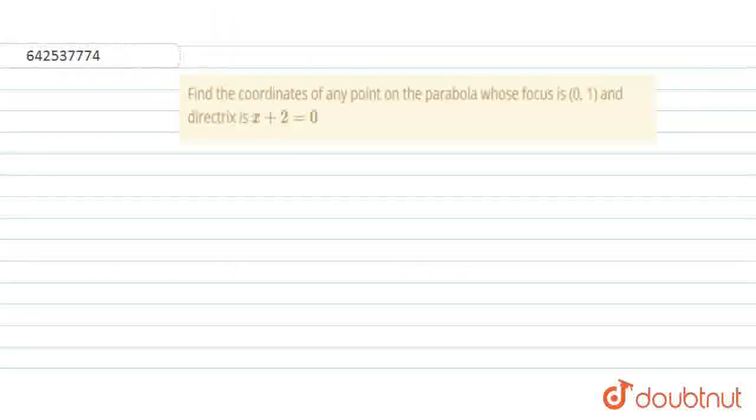Hello everyone, look at the question. The question says, find the coordinates of any point on the parabola whose focus is 0,1 and directrix is x plus 2 equals 0.